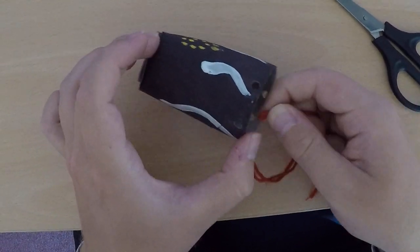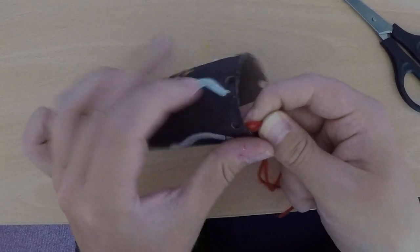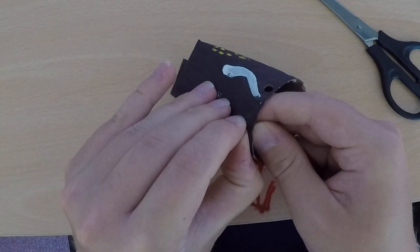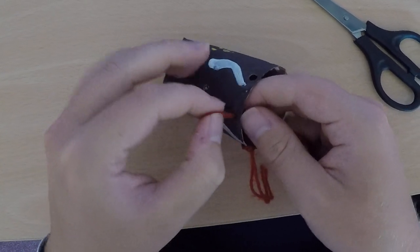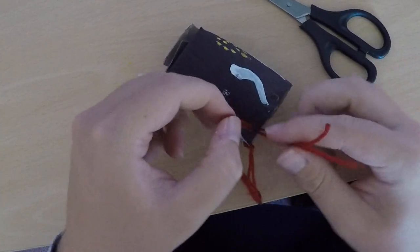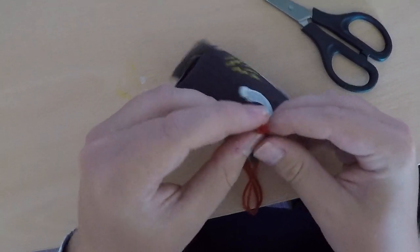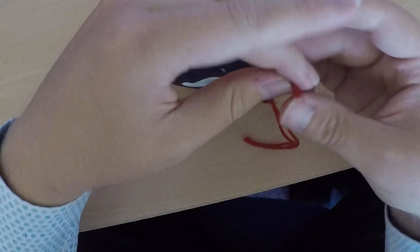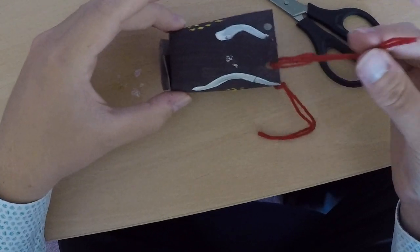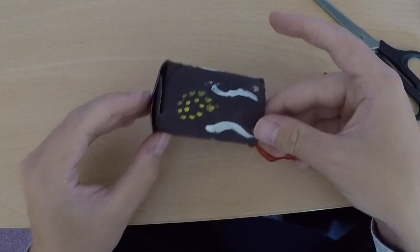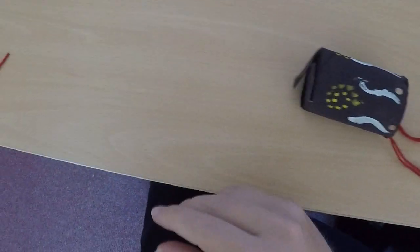Poke it through. Obviously the tighter your loop, the easier it's going to be to poke through. Pull that through there and then pull them through and pull them down.